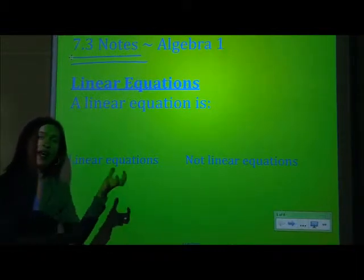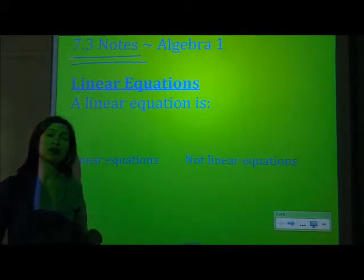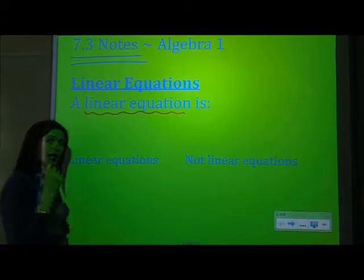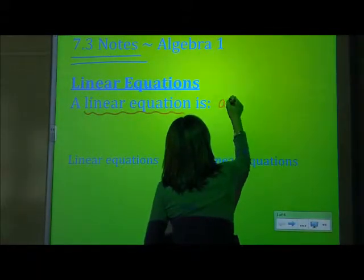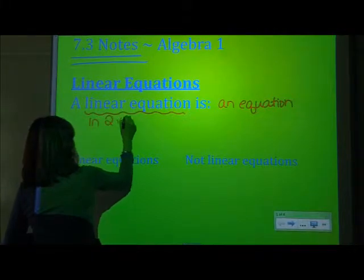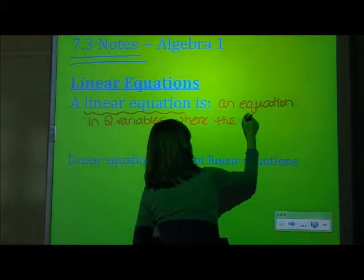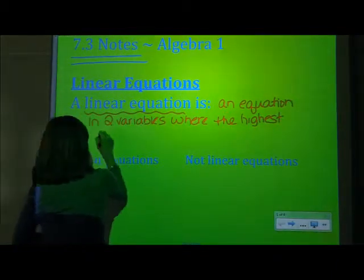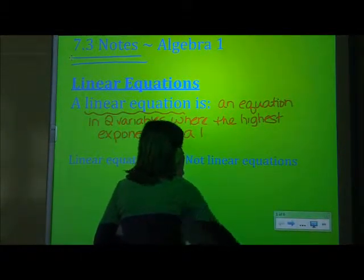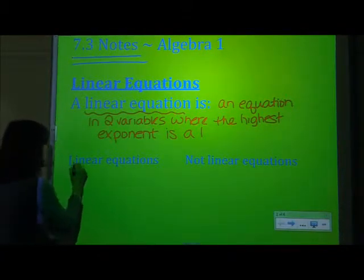First we're going to talk about linear equations. Yesterday we worked on coordinate points, the coordinate plane, and graphing using a table of values, and we're going to keep up with that today. But today we need to really identify what a linear equation is. A linear equation is an equation in two variables where the highest power — the highest exponent — is 1. We talked about quadratic equations earlier this year; the highest exponent was a 2. Here we're going to have a highest exponent of 1.